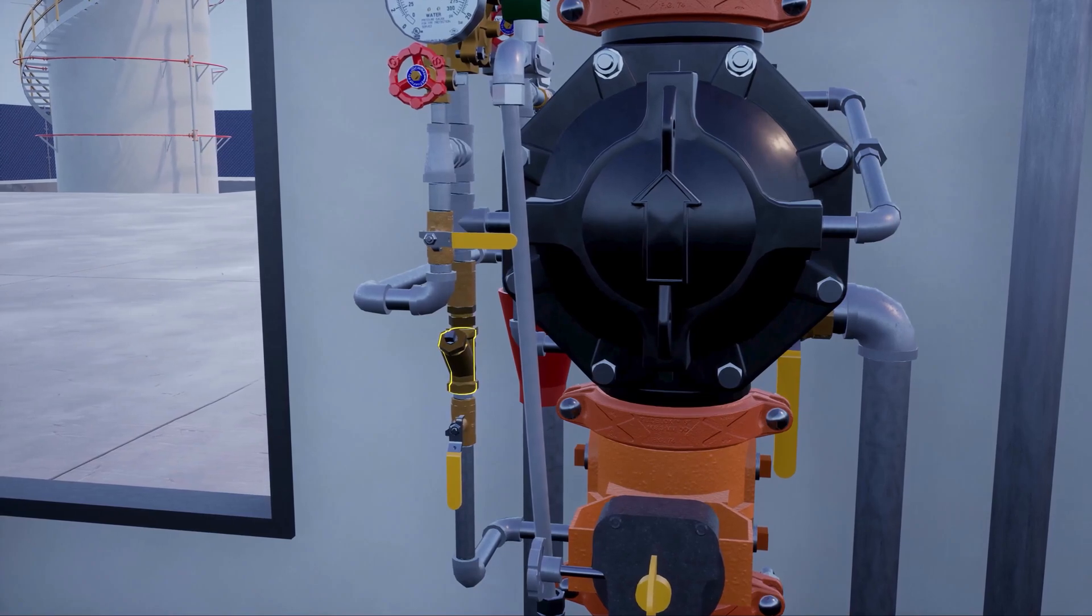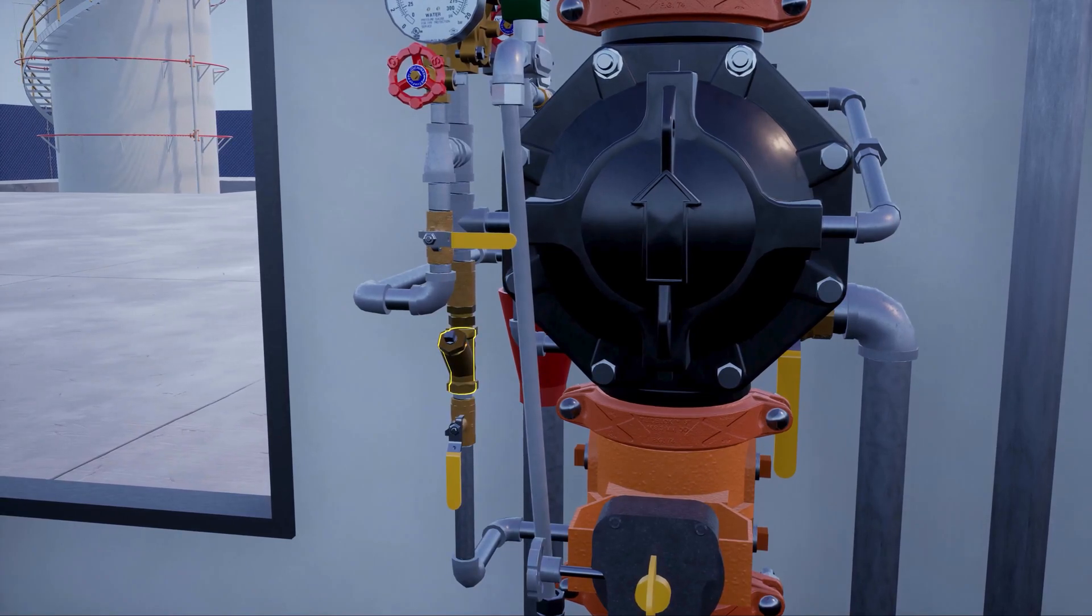The Y strainer keeps debris from entering the restricted orifice. The restricted orifice reduces the rate at which water can enter the prime chamber, ensuring that prime water will drain faster than it can be supplied.